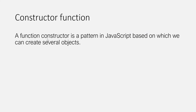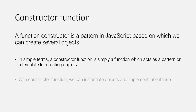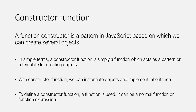A function constructor is a pattern in JavaScript based on which we can create several objects. In simple terms, a constructor function is simply a function which acts as a pattern or a template for creating objects. With a constructor function, we can instantiate objects and implement inheritance. To define a constructor function, we use a regular function or a function expression.